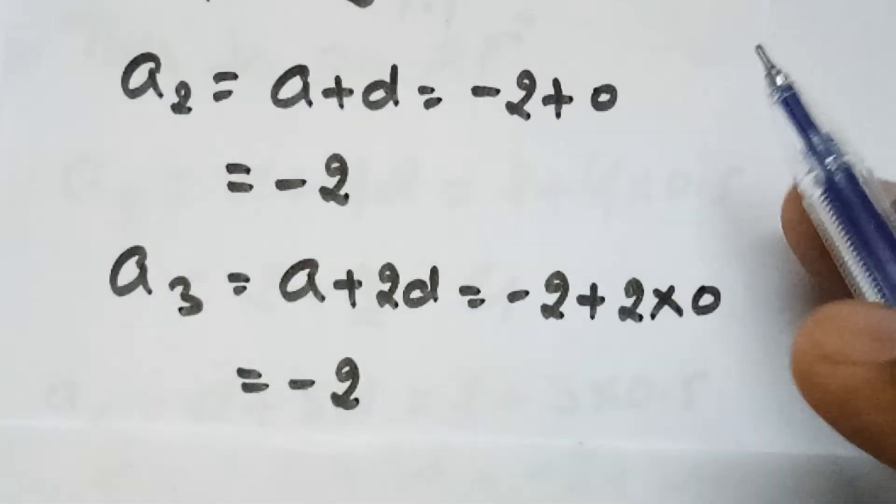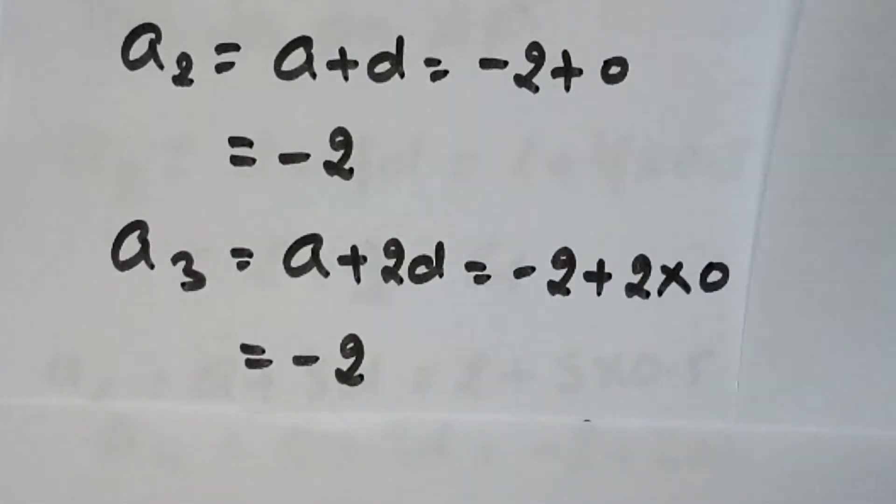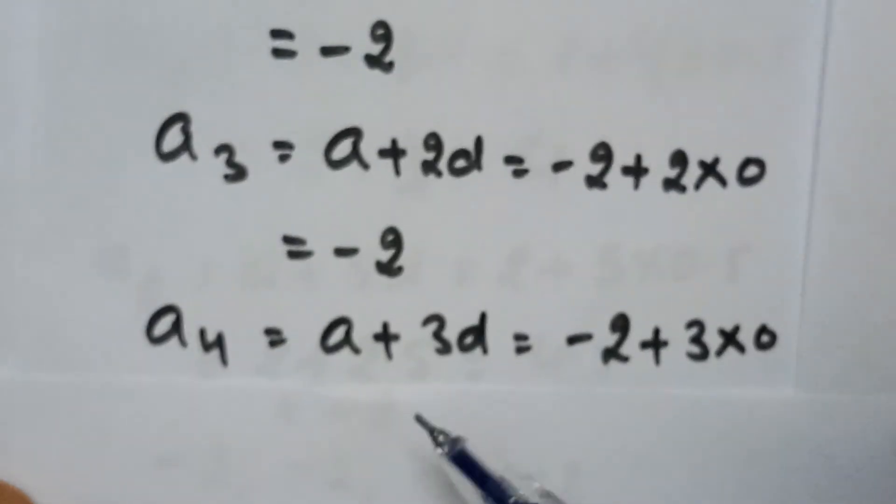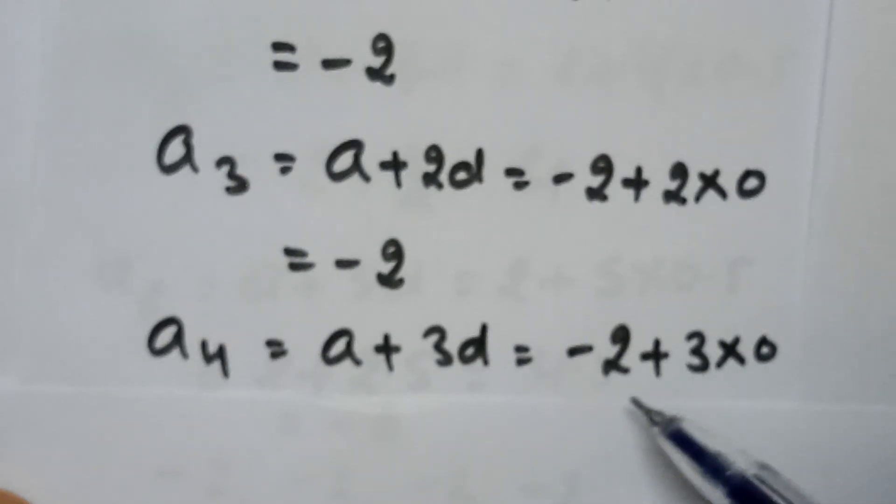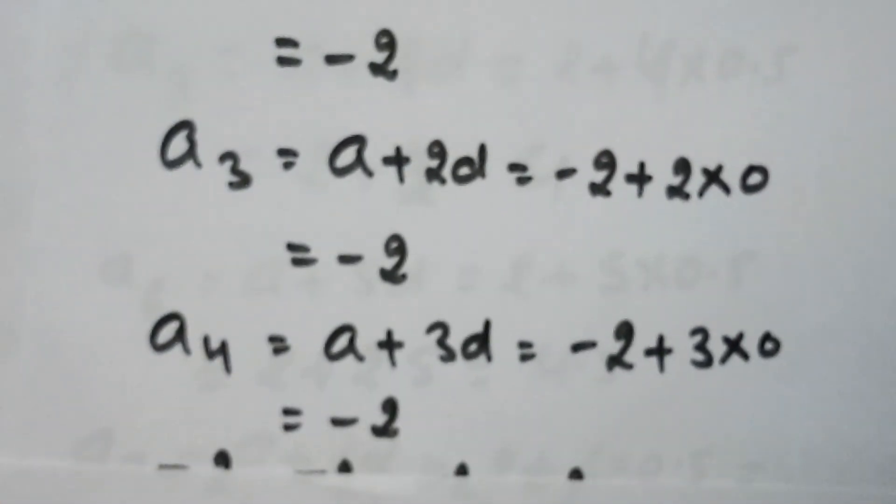Now fourth term. Fourth term equals A plus 4D. Fourth term is A plus 3D. A is minus 2, so minus 2 plus 3 times 0. 3 times 0 is 0, so again it is minus 2.